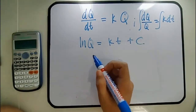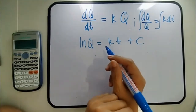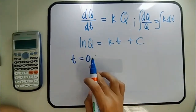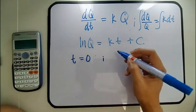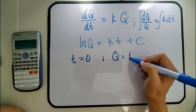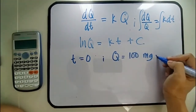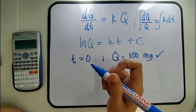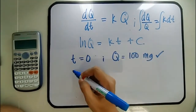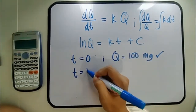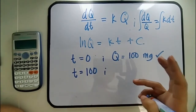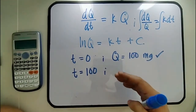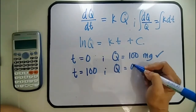The initial mass of the radium is 100 mg. Therefore, at time T = 0 (the initial time), Q = 100 mg. That is our first boundary condition. For the second boundary condition, at 100 years, the 100 mg of radium decomposes to 96 mg.